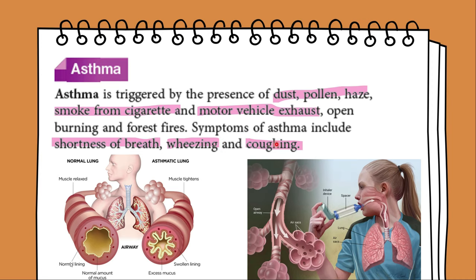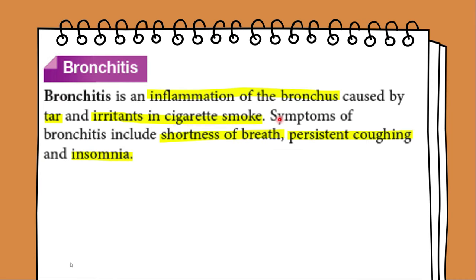Bronchitis is a disease caused by the inflammation of the lining of the bronchioles. This may be due to infection by bacteria or viruses, or chemicals such as those found in cigarette smoke. Chronic bronchitis is characterized by recurrent or chronic cough every day over a period of several months. The smoker's cough is an early sign of chronic bronchitis. In severe cases, the patient's fingers and lips may turn blue due to poor oxygenation of blood.